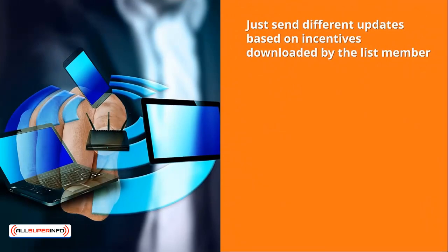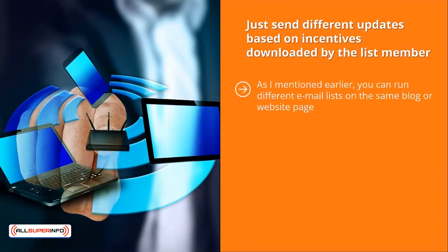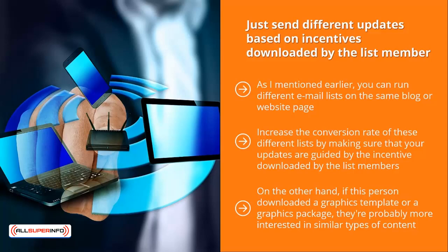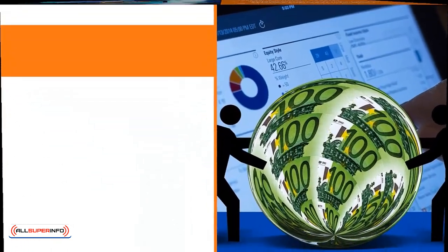You can also send different updates based on the incentives downloaded by the list member. As mentioned earlier, you can run different email lists on the same blog or website. When people click ads to sign up, they're actually signing up to different email lists, each offering different incentives. Increase conversion rates by making sure your updates are guided by the incentive the member downloaded. For example, if they downloaded a video, they likely want to watch other videos; if they downloaded a graphics template, they're probably interested in similar content. Ensure your updates speak to these different incentive preferences to maximize sales conversions.